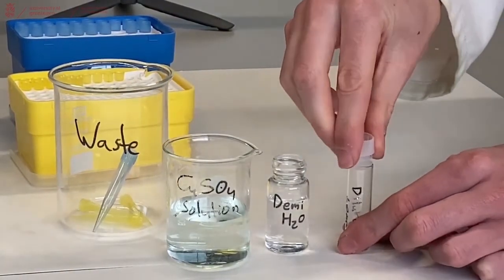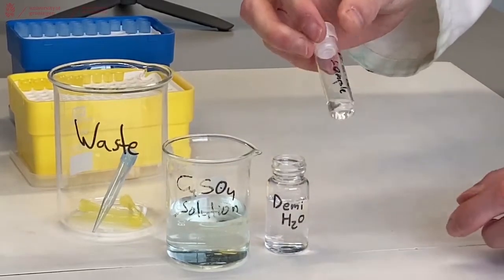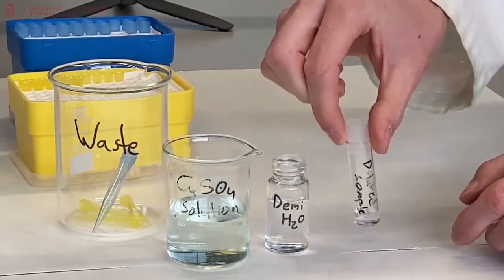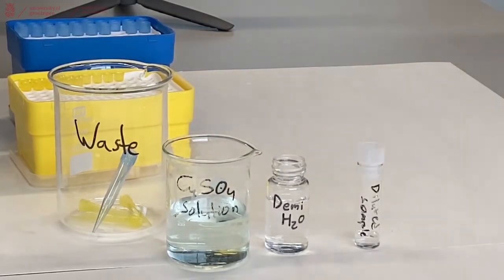Now you can close your vial and carefully mix everything to make a perfect dilution. This is how you use volumetric pipettes.